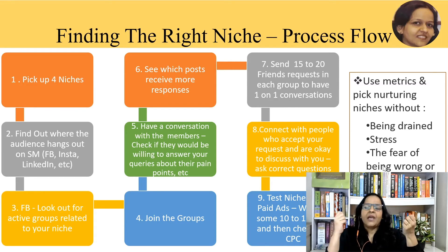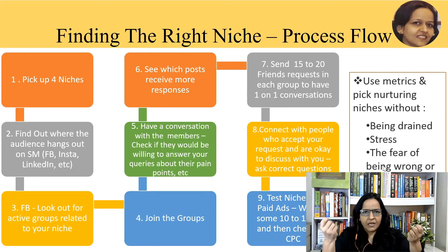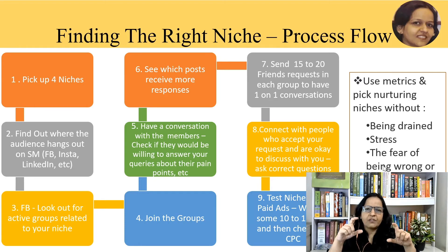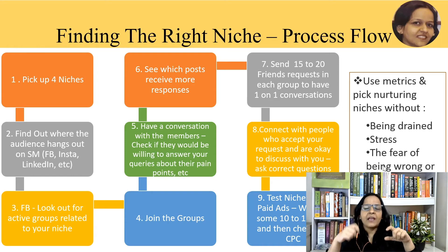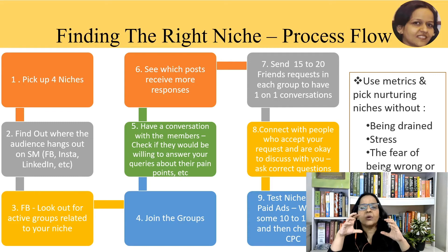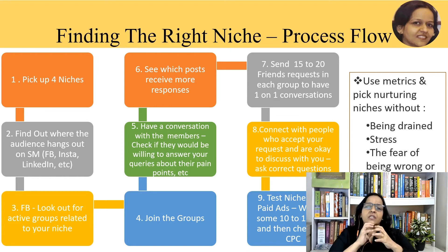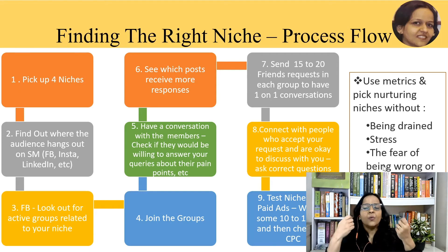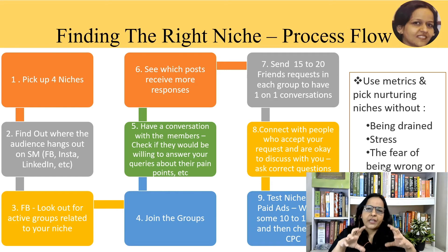Based on the cost per conversion — CPC — you can make a call. CPC means the amount invested divided by the responses generated. For example, if you invested 2,500 rupees in one niche and generated 100 responses, the CPC is 25 rupees. Go ahead with the niche where the CPC is lowest or the number of responses is highest, because that niche will be easier to handle and more open for conversation and feedback compared to niches where responses are fewer or CPC is high.